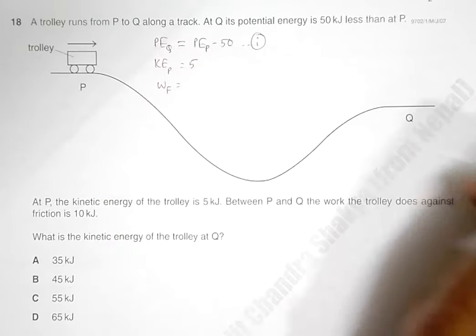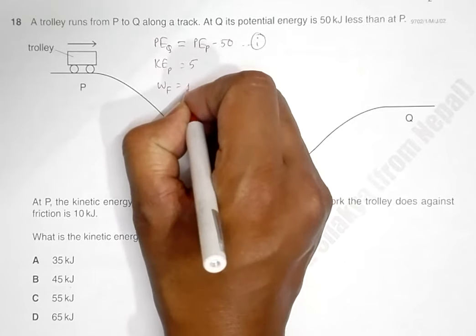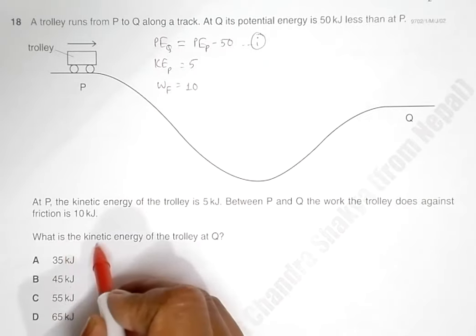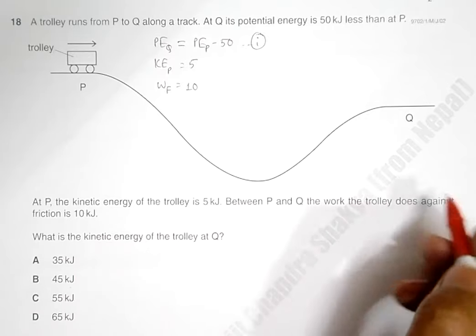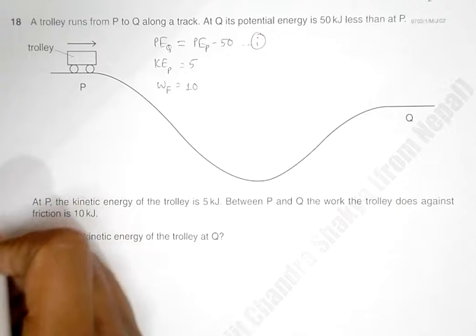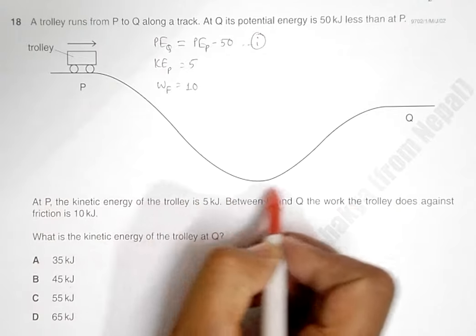We need to find what is the kinetic energy of the trolley at Q. Remember here that because of the friction along the surface, the energy here, the total energy here, the total energy of the trolley at P is used for two purposes.